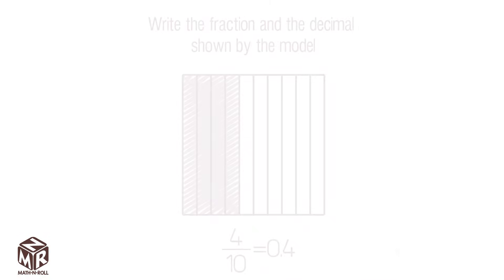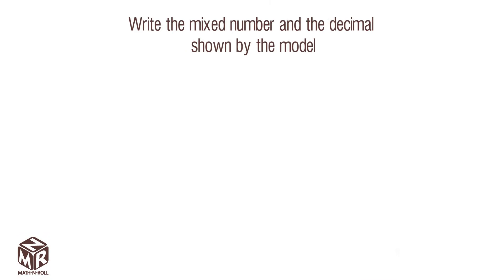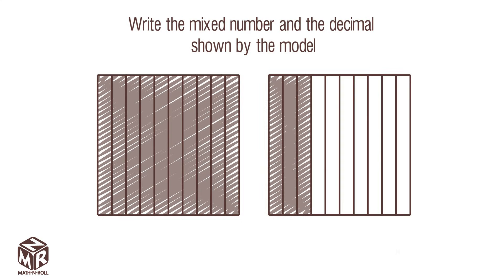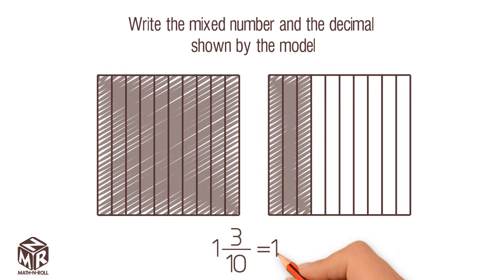Let's try another example. Write the mixed number and the decimal shown by the model. This time we have 1 whole and 3 out of 10 parts. So we write the mixed number as 1 and 3 tenths. The decimal is 1 and 3 tenths, or 1.3.